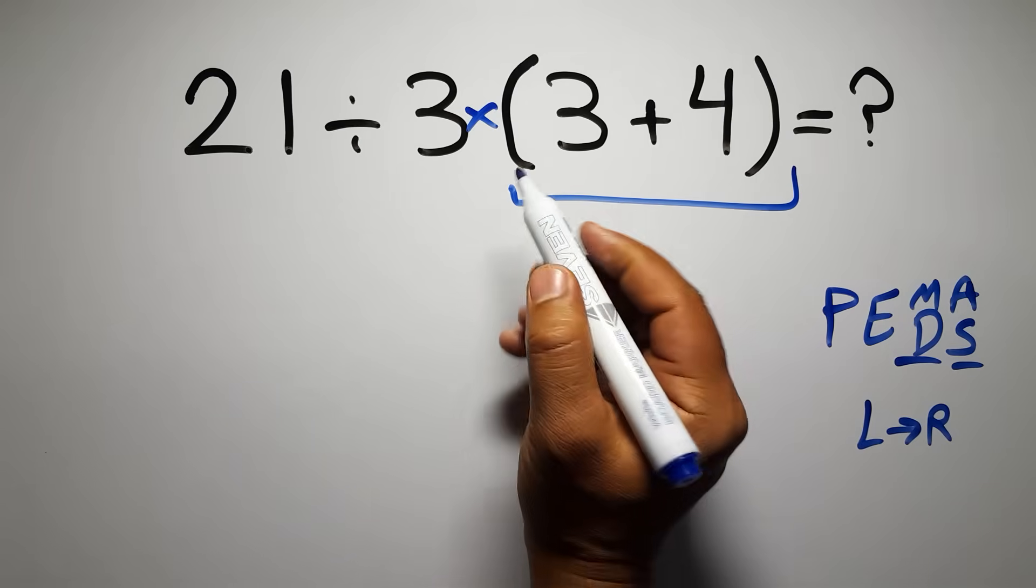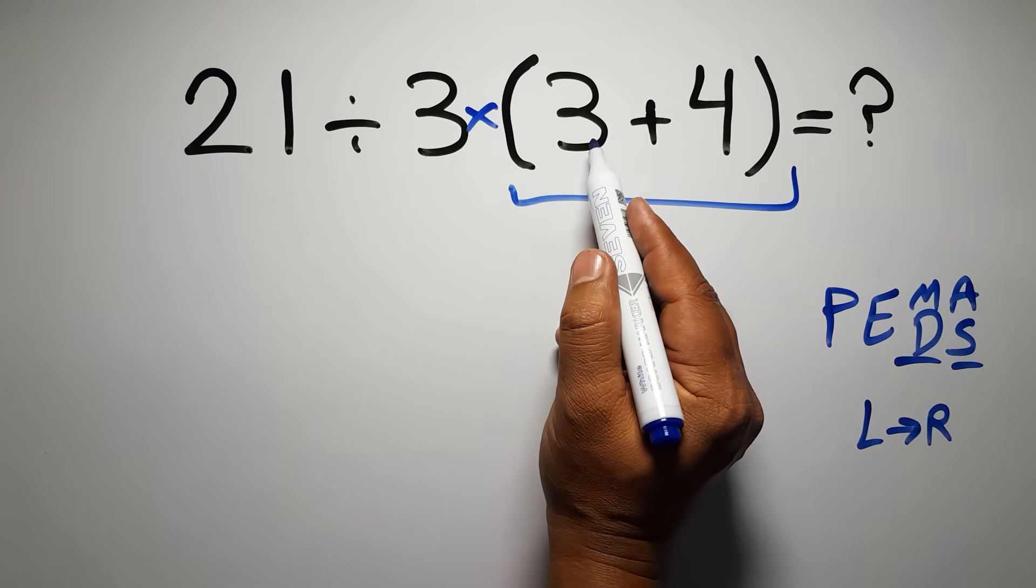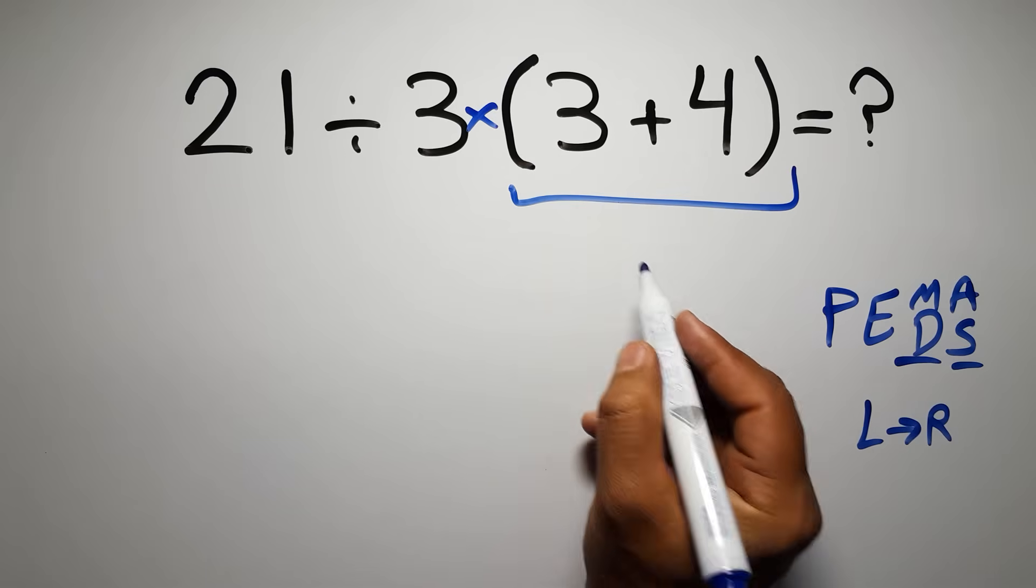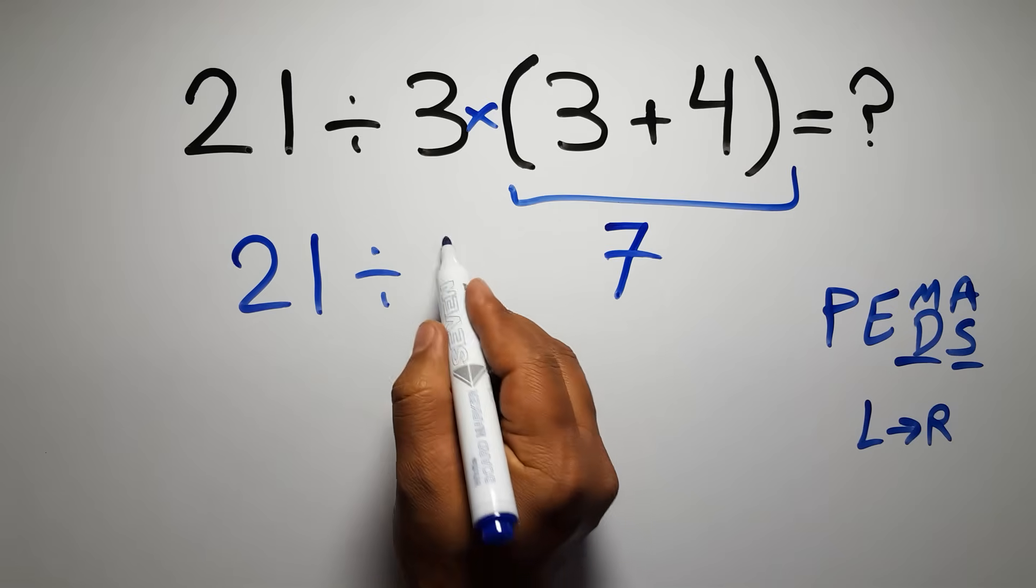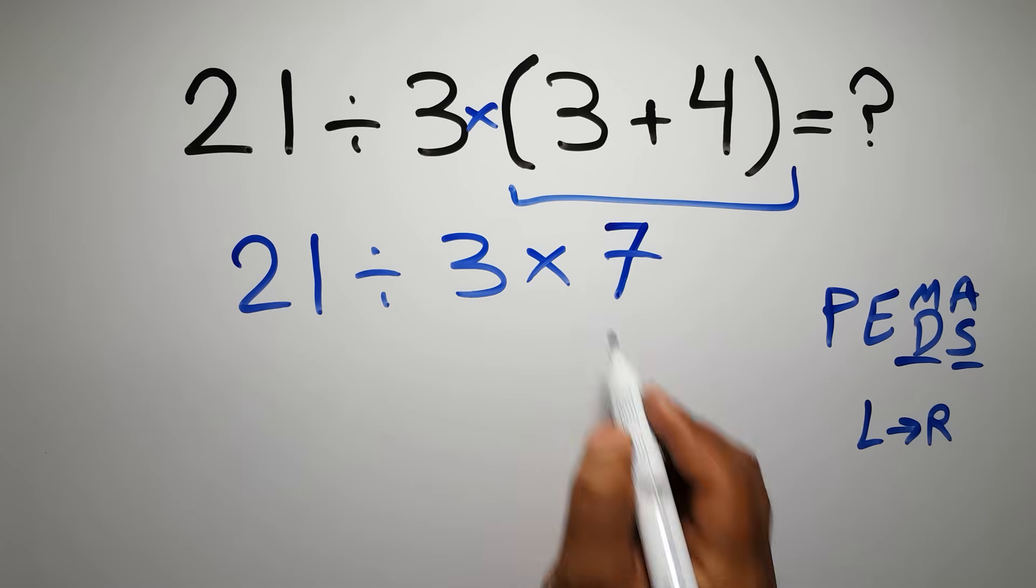So first, this parentheses. Inside these parentheses, we have 3 plus 4, which equals 7. So, 21 divided by 3 times 7.